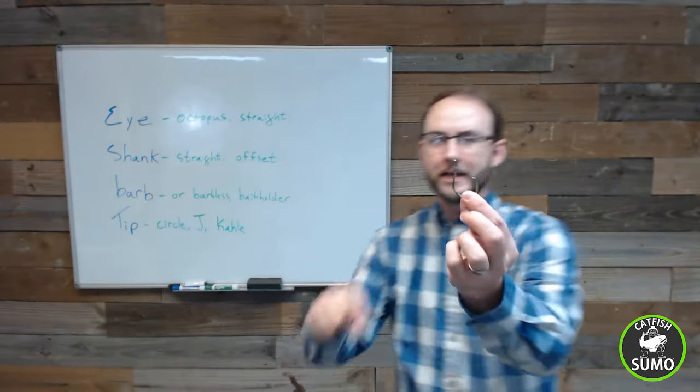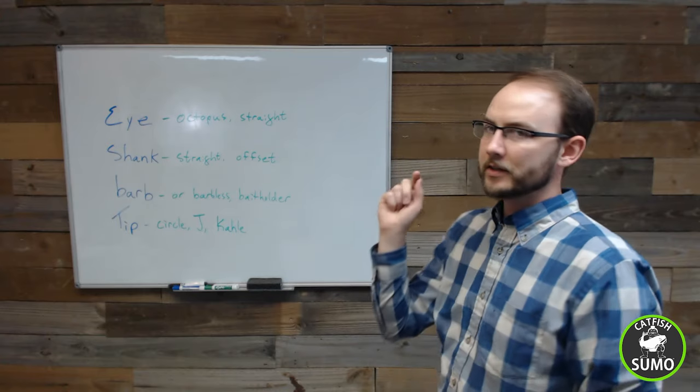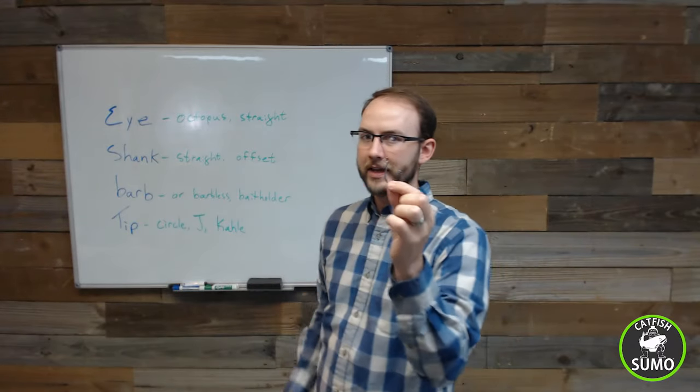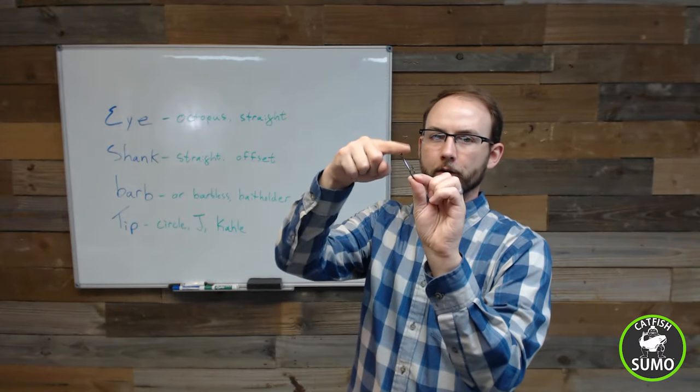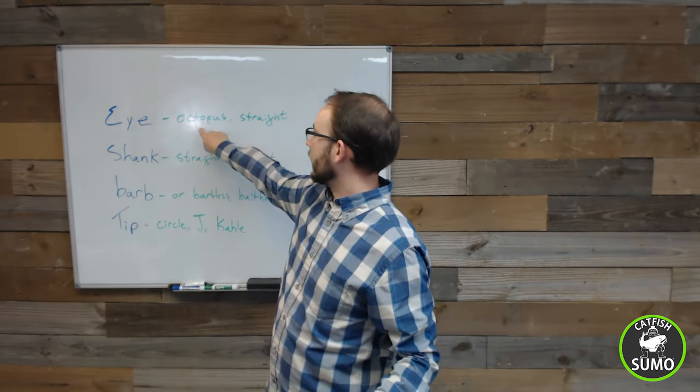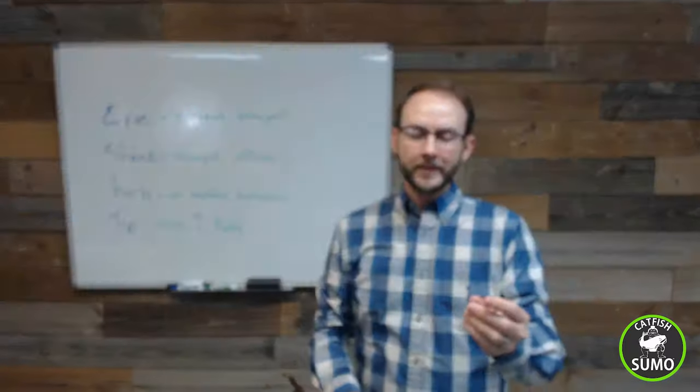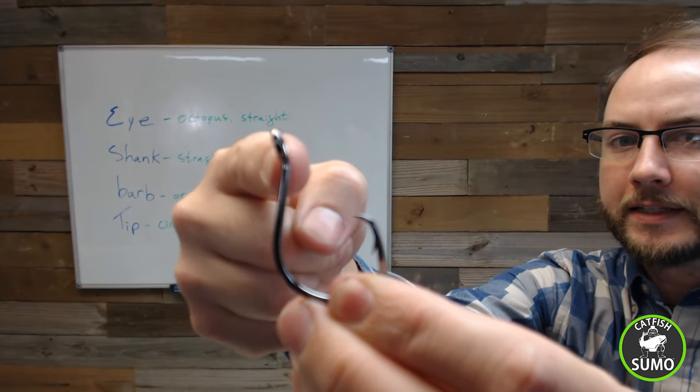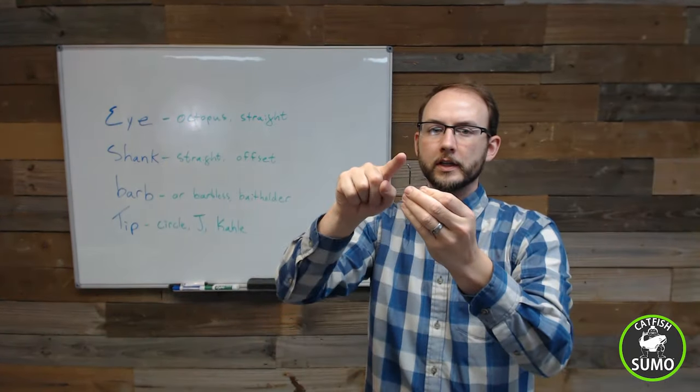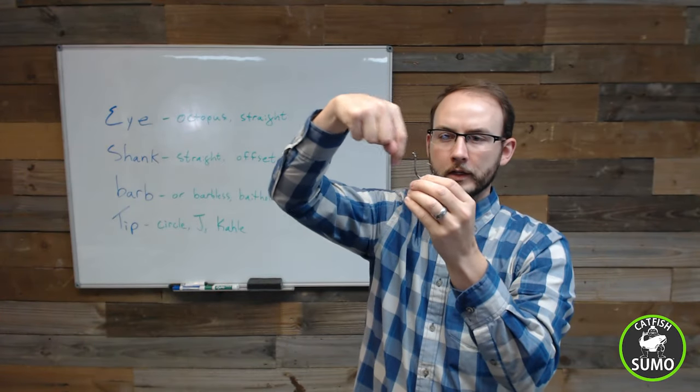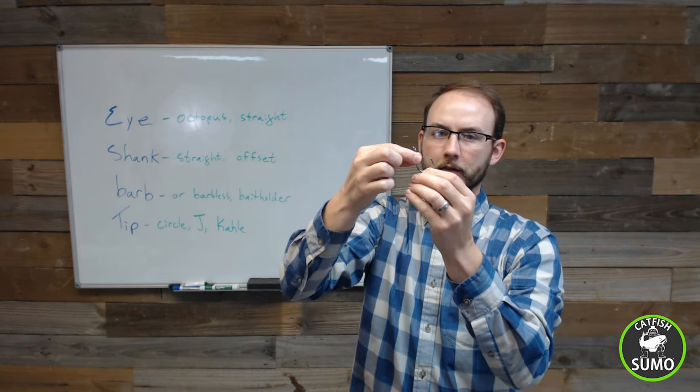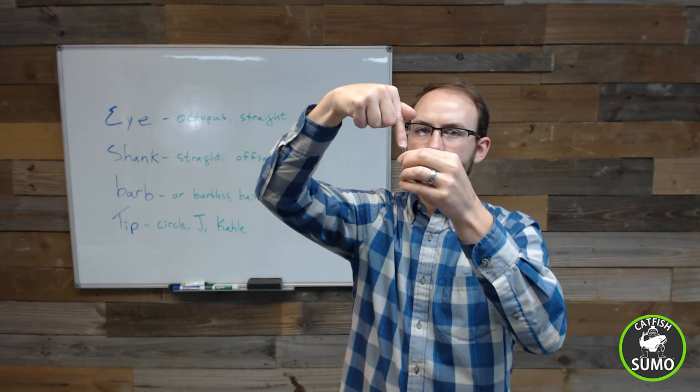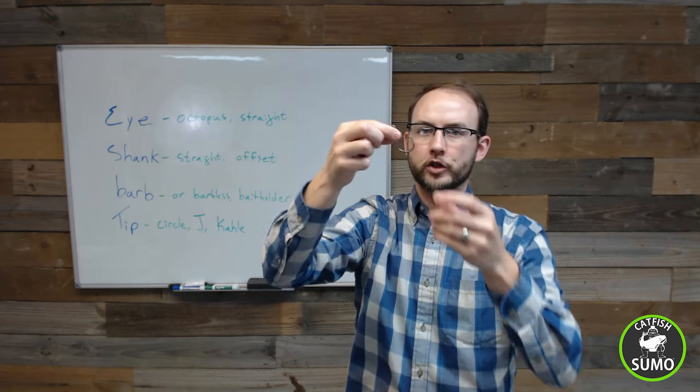So the first thing, starting from the top of the hook, is the eye style. There's basically two styles that are used. There's either an octopus or there's a straight eye. The thing is, here's an example of an octopus. The octopus eye is this one that is tilted out slightly. So usually that's designed so that you can snell, which means the line is wrapping around the actual shank of the hook. And that's the knot right there. So you can snell your hook. Your line is going to drop straight down through that eye. That's why it's tilted backwards.